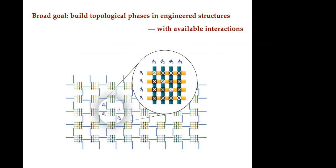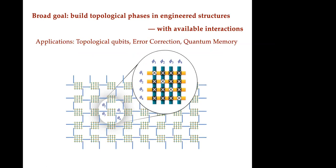The broad goal is to build topological phases in engineered structures with available interactions. The applications — topological qubits, error correction, quantum memory — I'm not going to spend too much time on specifics. This is really a conceptual framework. The real crux of the framework, and I'm going to keep using this word, is combinatorial gauge symmetry — a mathematical structure that makes the 'available interactions' piece possible.